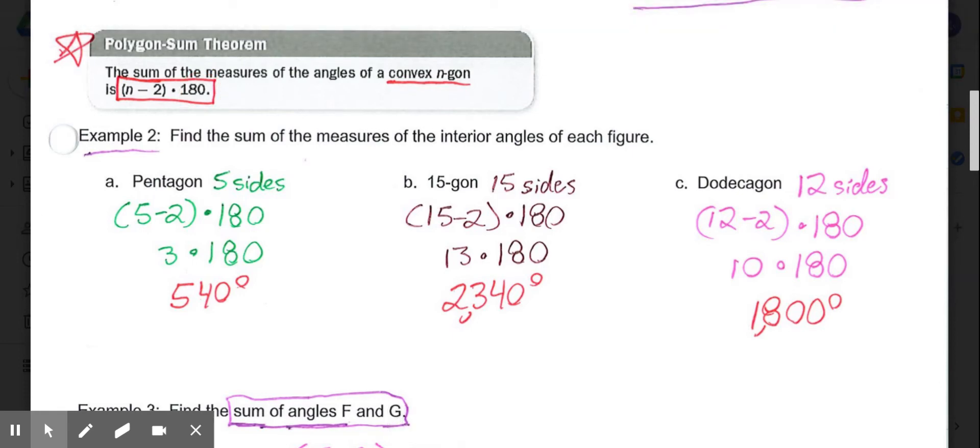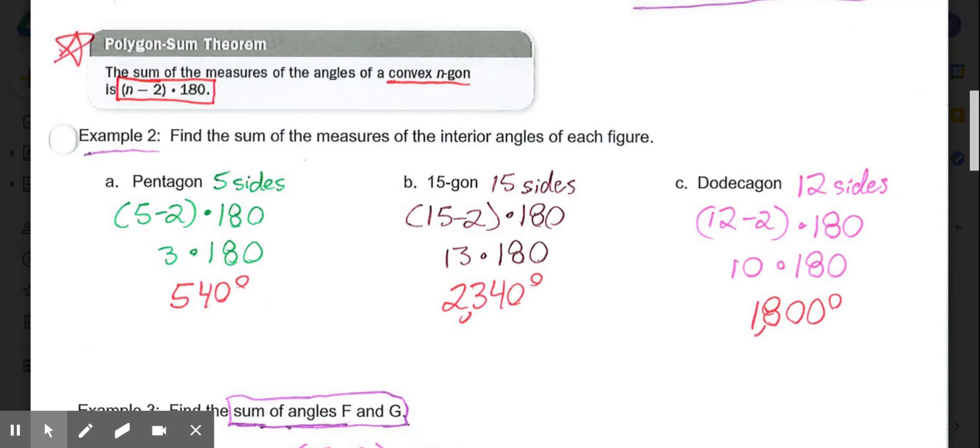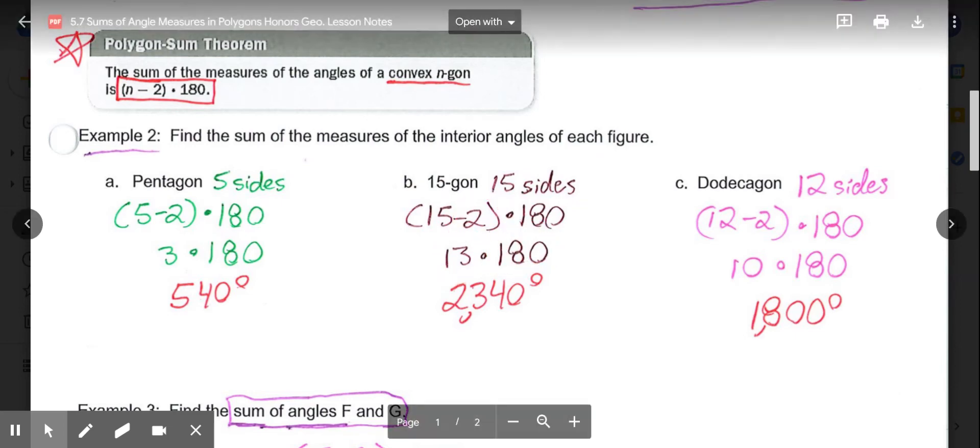If we have a pentagon, five sides, you would do 5 minus 2, which is 3, 3 times 180, 540. If we have a 15-gon, which is 15 sides, 15 minus 2, 13, 13 times 180. Or, dodecagon, 12 sides, 12 minus 2 is 10, 10 times 180 gives me 1,800 degrees.